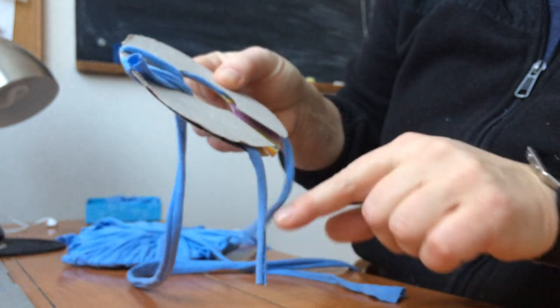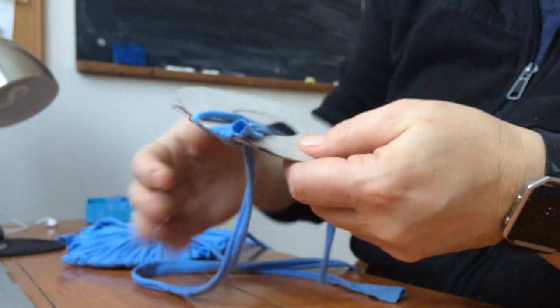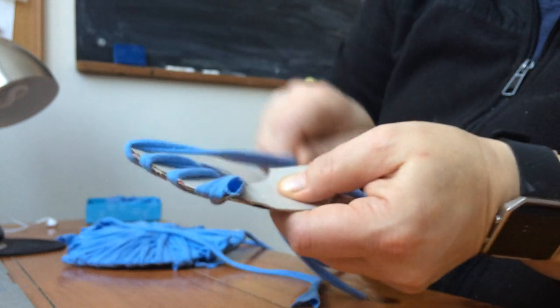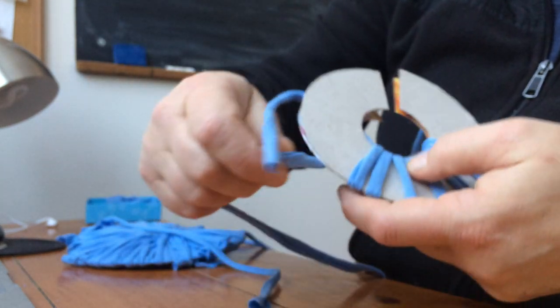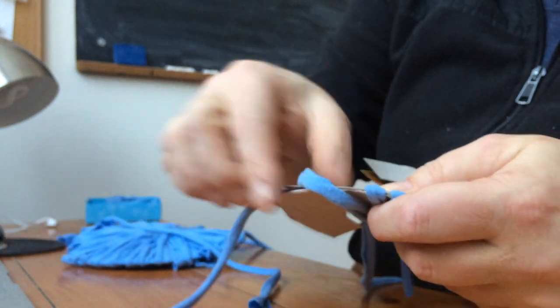This is the two ends. You always make sure you have them down. And this is how you wrap the strips or the material around.